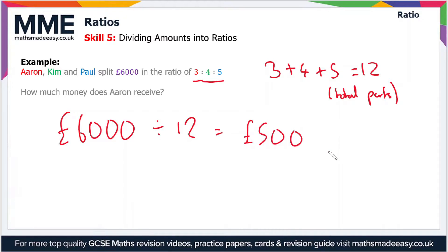Now we need to work out how much money Aaron receives. Aaron receives 3 parts, so we just multiply 3 by £500. So 3 × £500 = £1500. That's how much Aaron receives.